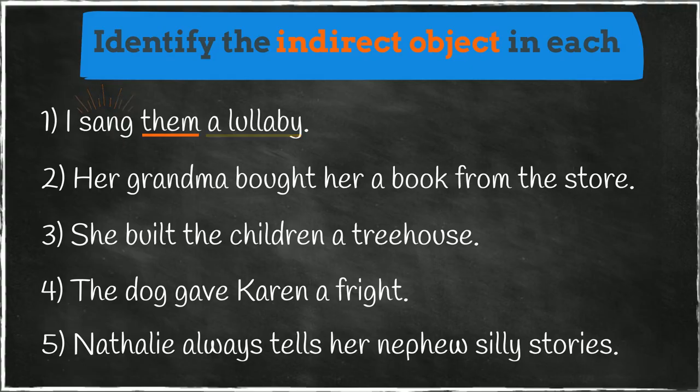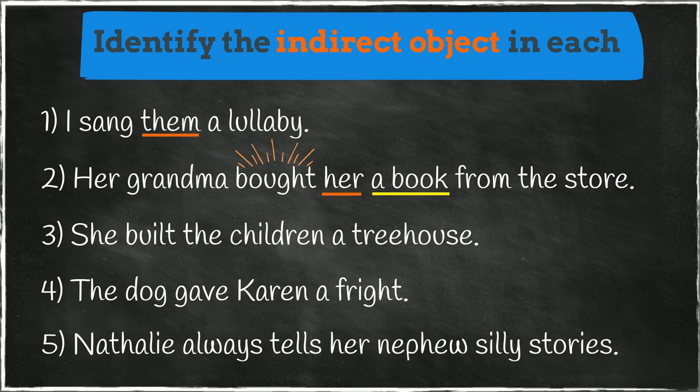Number two. The action is bought. What is receiving this action? A book. This is the direct object. Who or what is receiving the direct object? Her. The indirect object is her.